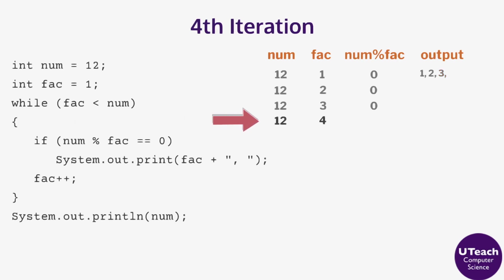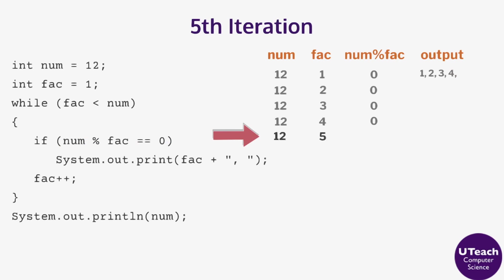For the fourth iteration, fact is less than num so the body of the loop executes. Checking that 12 mod 4 is equal to 0, the output is 4 comma. Fact is incremented to 5. For the fifth iteration, fact is less than num so the body of the loop executes. Since 12 mod 5 is 2, the if statement does not execute and there is no output. Fact is incremented to 6.